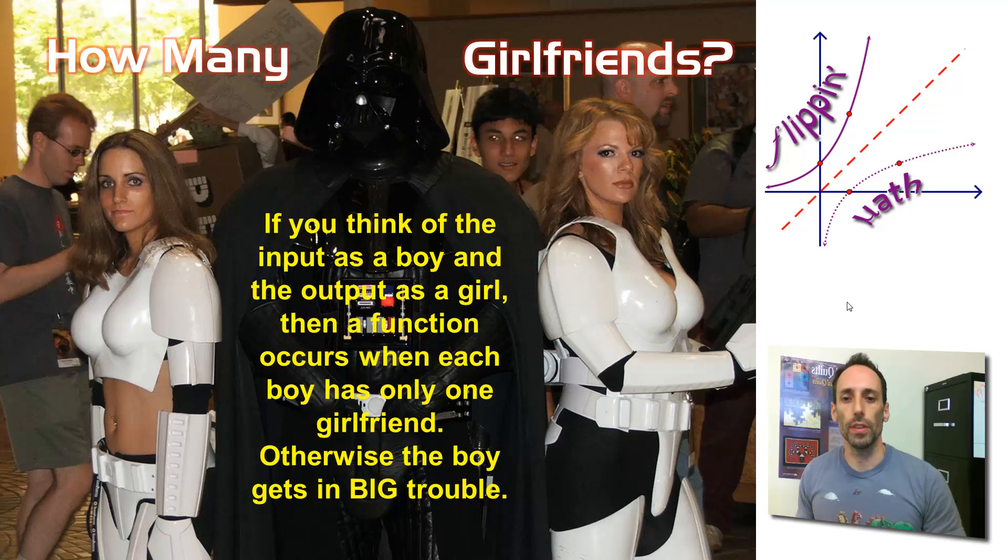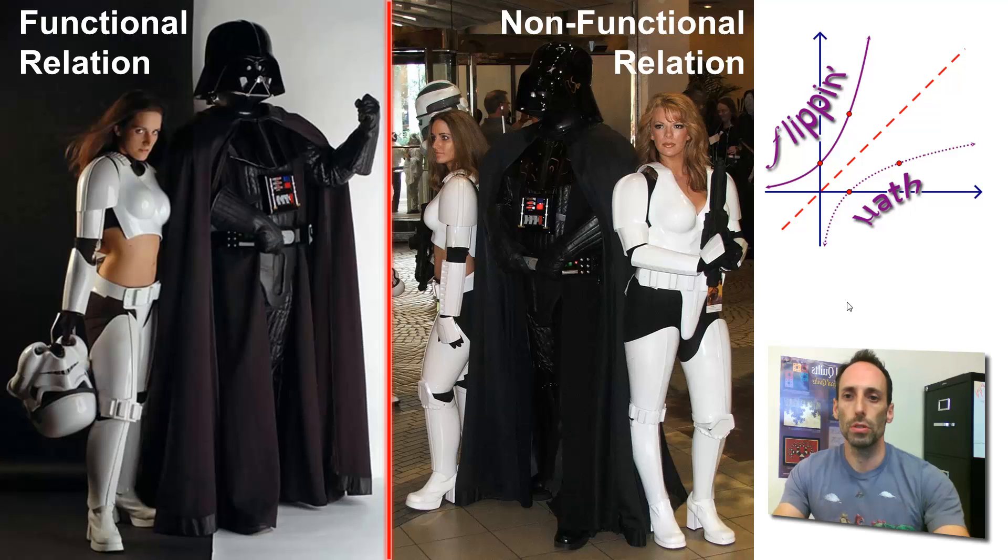Here's another way to think of this. If you think of inputs as boys and an output as a girl, then you have a function when every boy has one and only one girlfriend. Otherwise, that boy is going to get into some big trouble. So let's look at these two pictures. On the left-hand side, you have Darth Vader. He has only one girlfriend, that stormtrooper, and that is a functional relation. One input, that input goes with just one output.